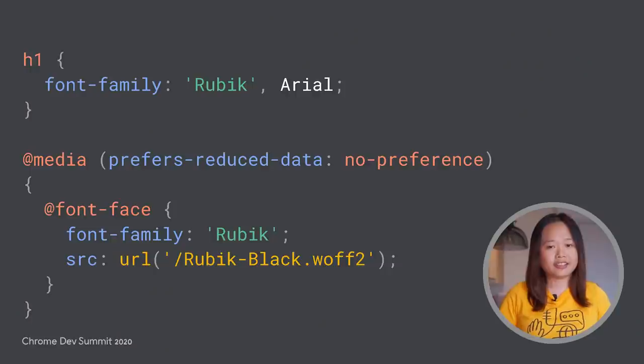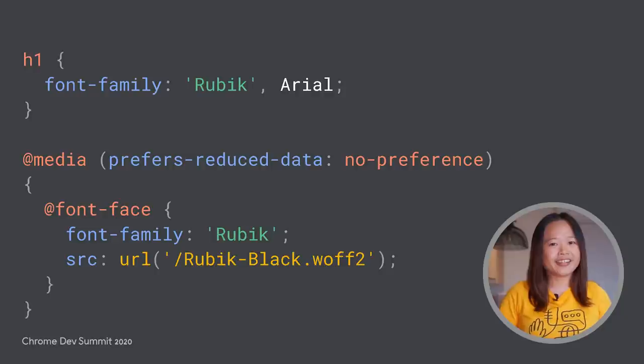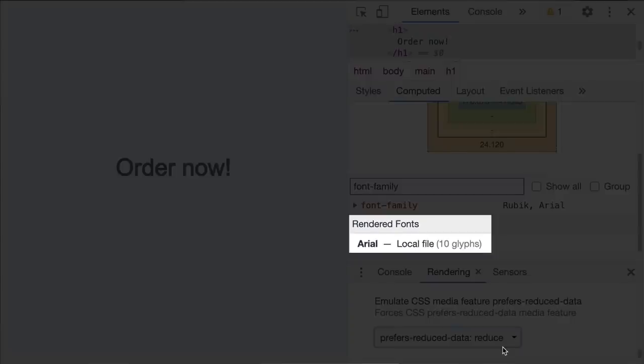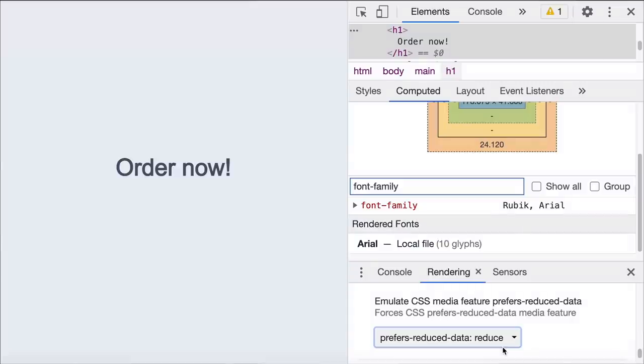DevTools also added a new CSS media emulation to emulate the preferred-reduced-data media query. In this example, we have CSS code to skip downloading custom web fonts if the user turns on data saving mode. Enable the preferred-reduced-data emulation — the rendered font now falls back to the system font instead.